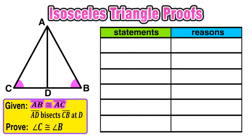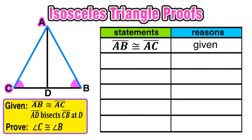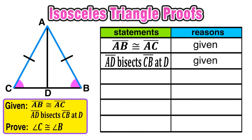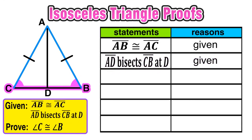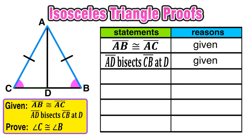So now we're ready to start filling in this table. Our first given says that segment AB is congruent to segment AC, and again that was a given — that is our reason. Now on the diagram, let's label AB and AC with the same dash to show that they are congruent to each other. Now we're ready for our next given, which says that segment AD bisects segment CB at the point D, and again that was a given. So basically that base CB is getting cut in half by that vertical line AD.